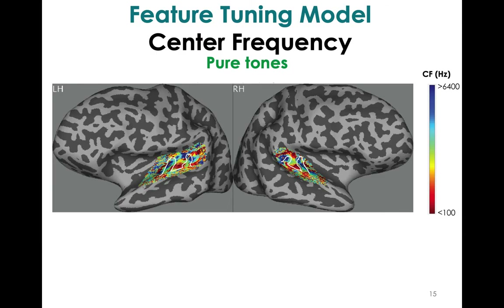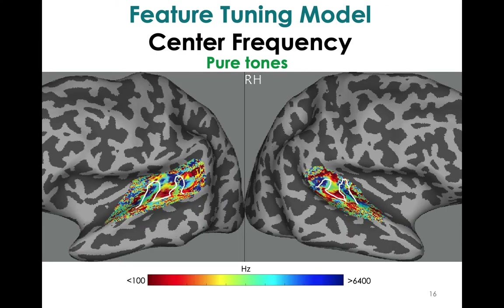Here's another subject. This subject actually has two Heschl's gyri in each hemisphere, and the tonotopy is centered between the two. This demonstrates how these maps can differ in their exact location and shape, but also points out the consistency of this clear gradient reversal mapping, which we see in all of our subjects.